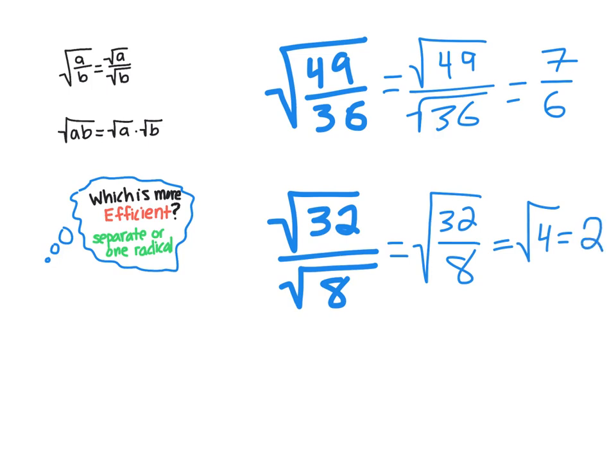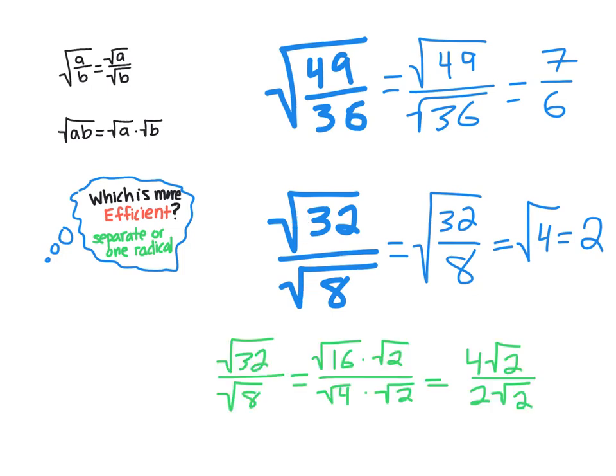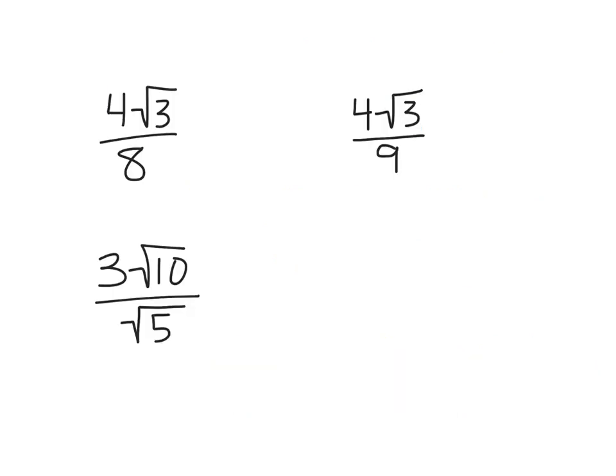So I always want to ask myself, is it more efficient to keep them separate, which it usually is if at least one of them is a perfect square? And if not, would it help me to simplify them? If I hadn't noticed that this would make it easier to simplify by rewriting them as one radicand, that's okay. I could simplify the square root of 32 to 4√2, and I could simplify the square root of 8 to 2√2. Now from here, I can still do some simplifying. The square root of 2 over the square root of 2 are going to cancel out to 1 and 1. And 4 over 2 is going to cancel out to 2 over 1, so I still get my answer of 2.